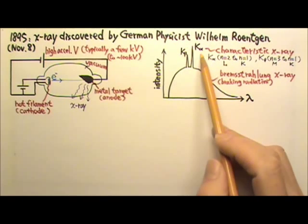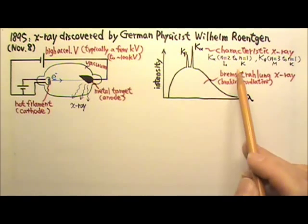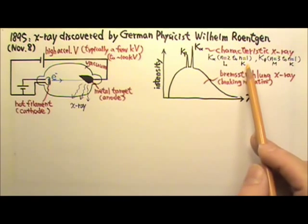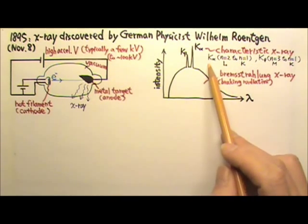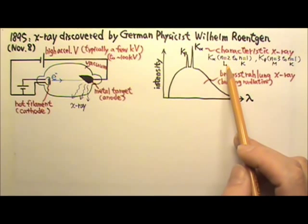The K lines are transitions into the K shell. The innermost N equals 1 shell is called the K shell. A K-alpha X-ray photon is emitted when an electron falls from the L, N equals 2 shell, to the K, N equals 1 shell.